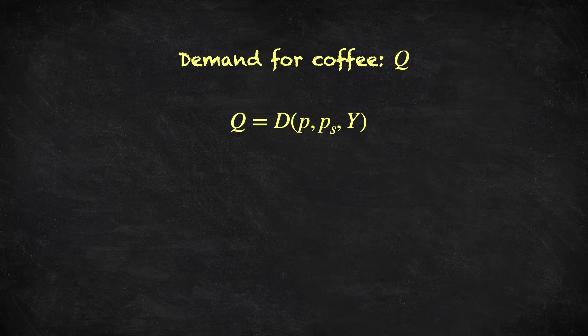For the demand function for coffee, we haven't specified a functional form, so this is very general at the moment. We can in fact learn quite a lot by keeping things as general as possible, but it's often convenient to work with special cases, for example, linear demand functions.